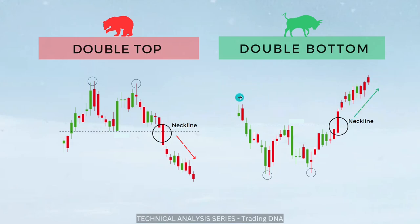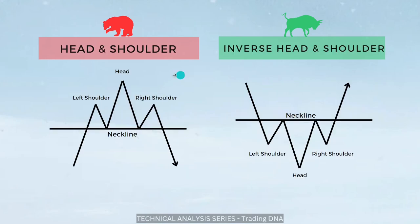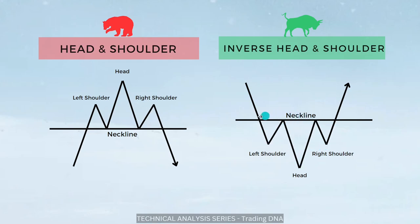Top and bottom patterns fall under reversal patterns. Moving on to the next: head and shoulder and inverse head and shoulder. In head and shoulder, you can see three swing highs where the middle swing is the highest peak, resembling a left shoulder, a head, and a right shoulder. When the stock is in an uptrend and this pattern forms, you can expect the price to go down; once it breaks the neckline, a trader can go for short selling. Inverse head and shoulder is the opposite — once the neckline is broken, a trader can go long. Inverse head and shoulder is bullish; head and shoulder is a bearish pattern.